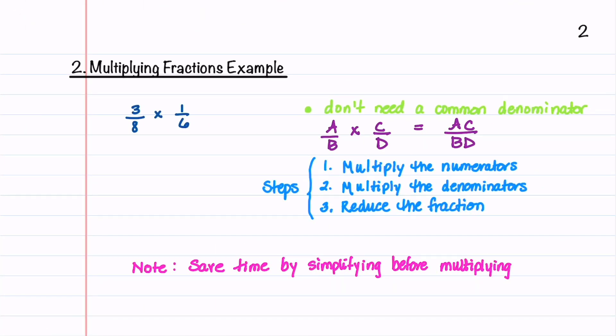Let's now review how to multiply fractions. This is very straightforward compared to addition and subtraction. When we multiply two fractions, we don't need a common denominator. All we need to do is to multiply the numerators, multiply the denominators, and then reduce the fraction.